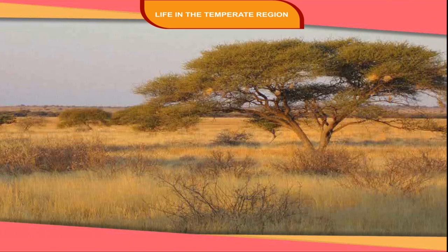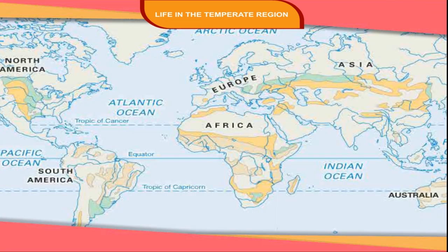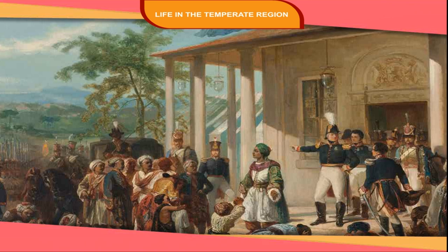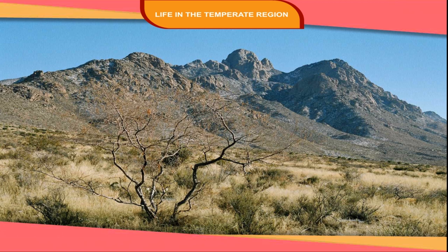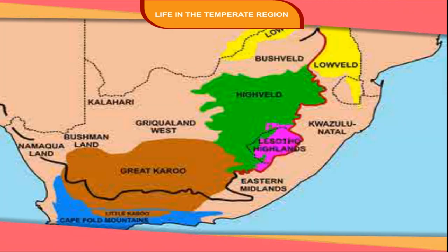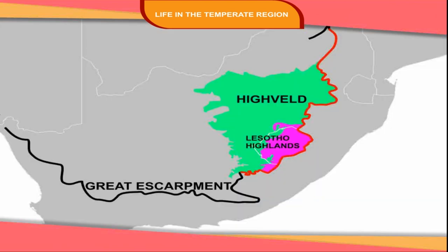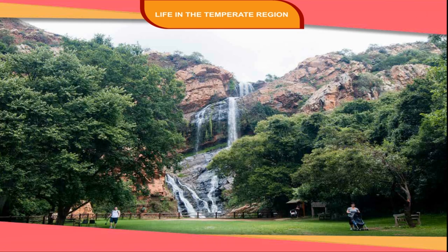The Veld: Veld means field in Dutch, which is the name for the temperate grasslands of southeastern Africa. As this part of Africa had remained under Dutch colonial rule, it has acquired the Dutch name. The Veld is found on the plateau region between the Drakensberg Mountains on the east and the Kalahari Desert on the west. The northeastern part of the plateau is called the High Veld. The Witwatersrand, also called the Rand, cuts across the High Veld through Johannesburg.